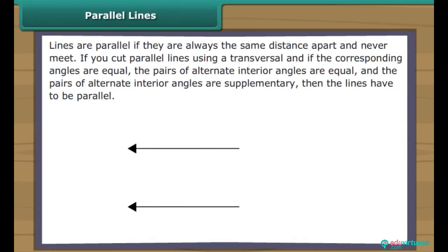Lines are parallel if they are always the same distance apart and never meet. You can also check if lines are parallel by cutting the lines using a transversal. If the corresponding angles are equal, the pairs of alternate interior angles are equal, and the pairs of alternate interior angles are supplementary, then the lines have to be parallel.